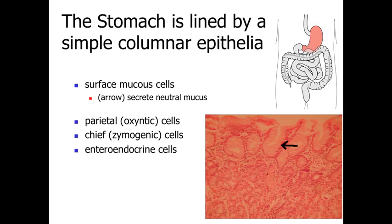The stomach itself is lined by a simple columnar epithelium — one cell layer thick, with cells that are taller than they are wide. The surface cells are mucus-secreting, producing a neutral mucus. This is important because the mucus lubricates the epithelial lining and neutralizes the acidity of stomach contents — we're dumping a lot of acids into the lumen to break down food, but we don't want those acids to erode the epithelial lining.